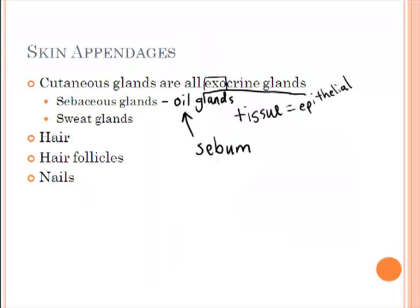Sebaceous glands produce oil that helps to lubricate and keep our skin moist and keeps the hair from getting brittle. They also have a protective function — the oil contains chemicals that will kill bacteria living on our skin. Sebaceous glands can become a problem because they can become blocked, resulting in whiteheads, blackheads, acne, or infection. Some infants when born have a lot of sebum — this is called cradle cap — caused by overactive sebaceous glands.